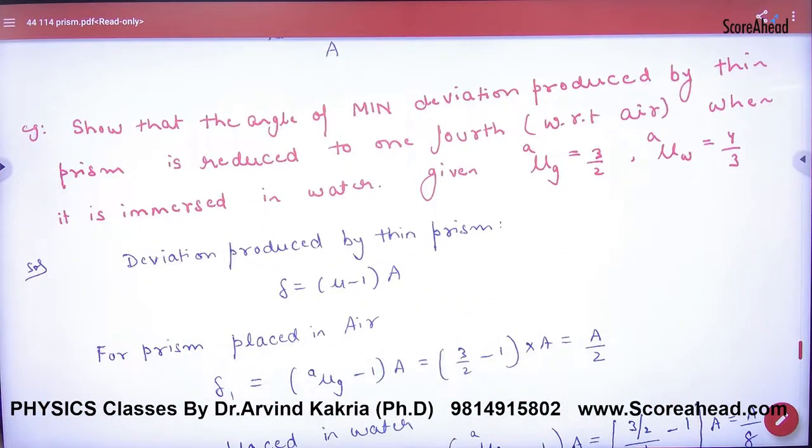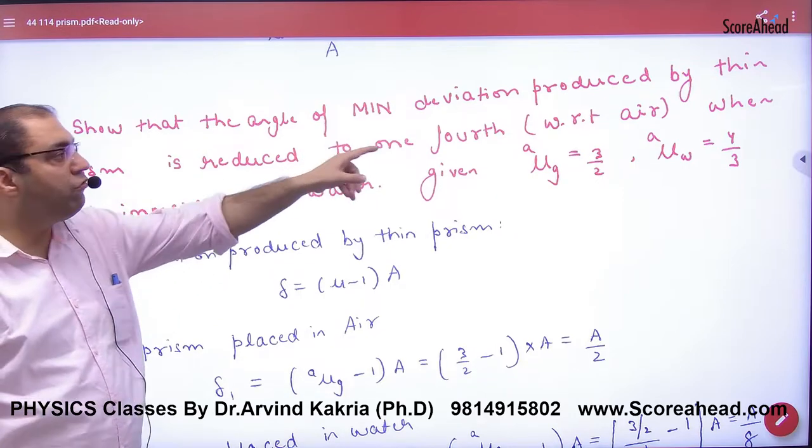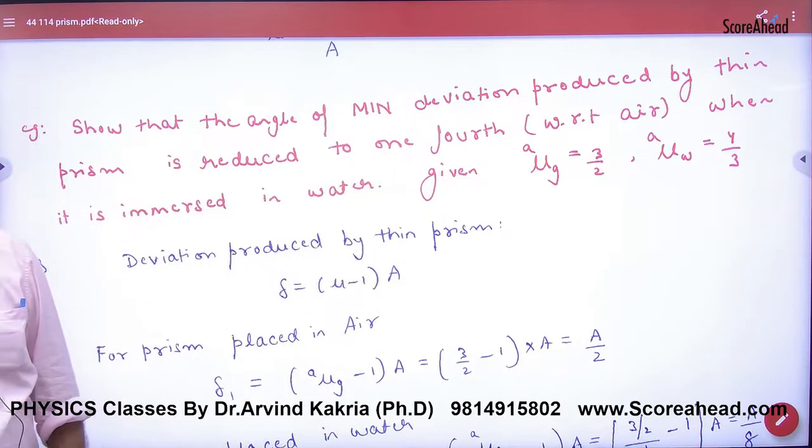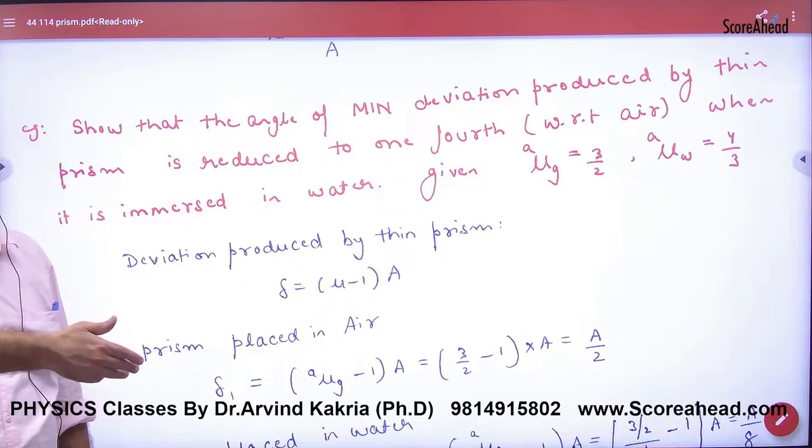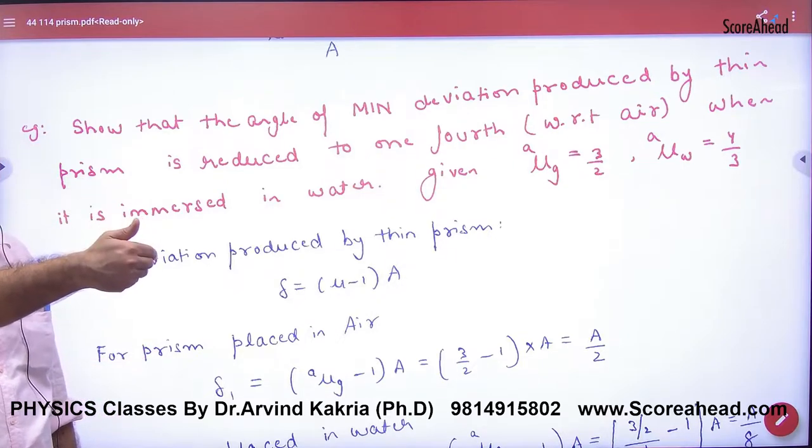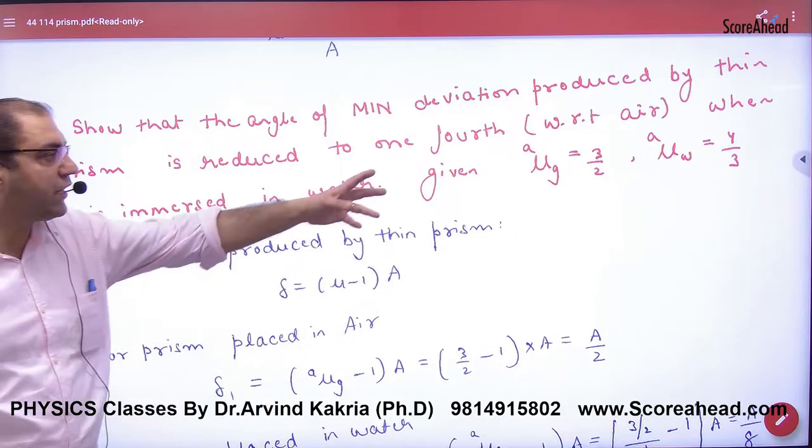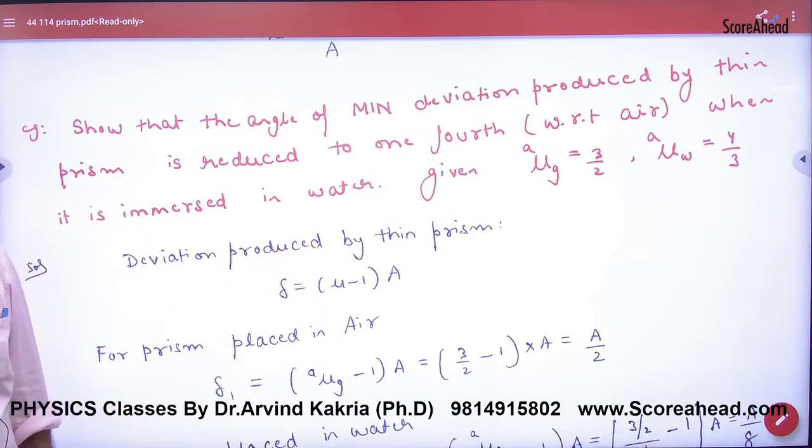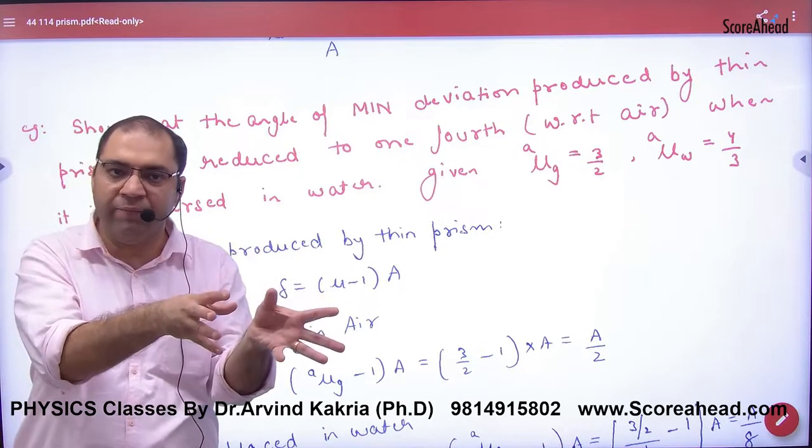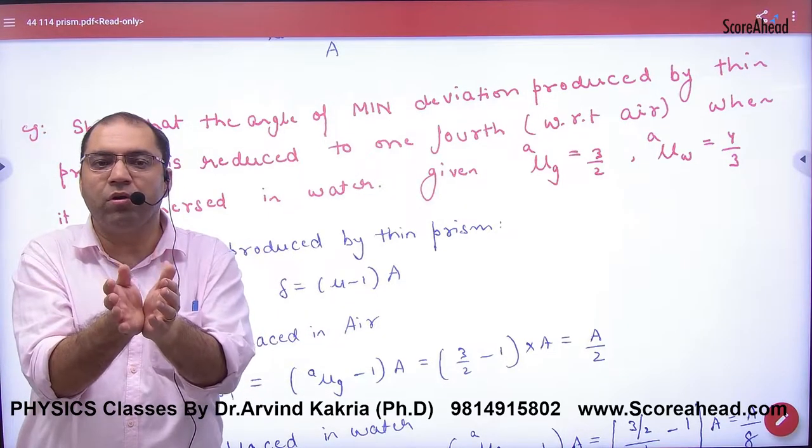Show that angle of minimum deviation produced by thin prism, delta M, is reduced to one-fourth. So angle of deviation becomes one-fourth when the prism is in air versus when it is immersed in water with refractive index 3/2 and 4/3. One time put the prism in air, one time put the prism in water.